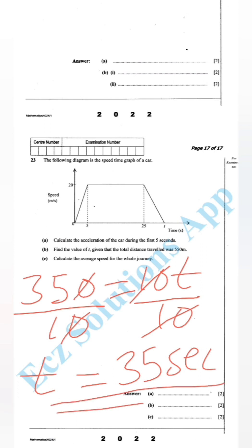That is your answer — you have gotten your two marks again. I have answered question A and B, and we are just remaining with C. Where there is T on the graph, the value is 35 seconds. Take note of that.